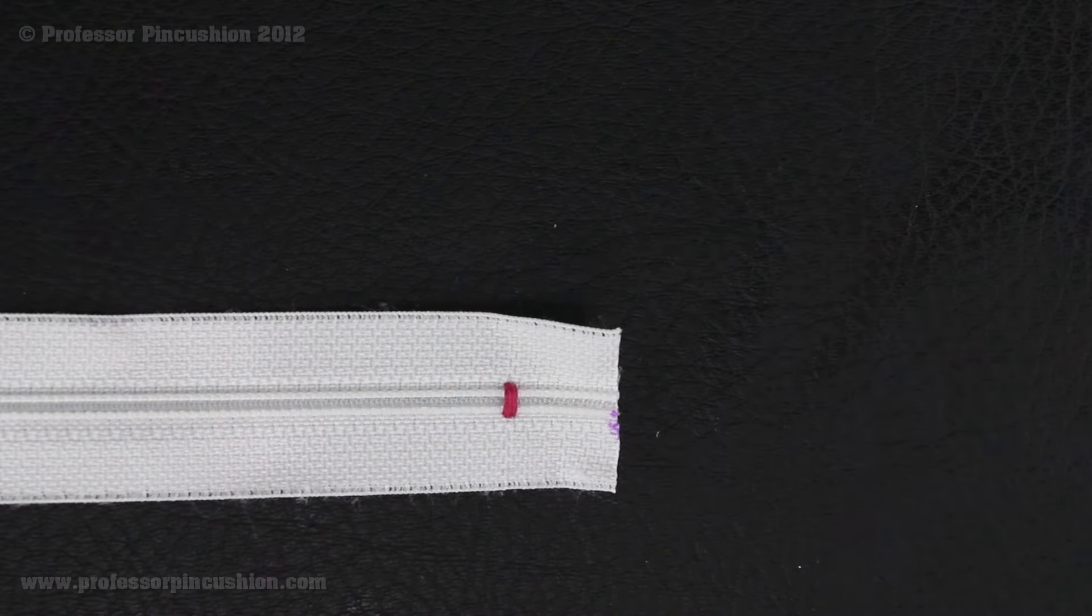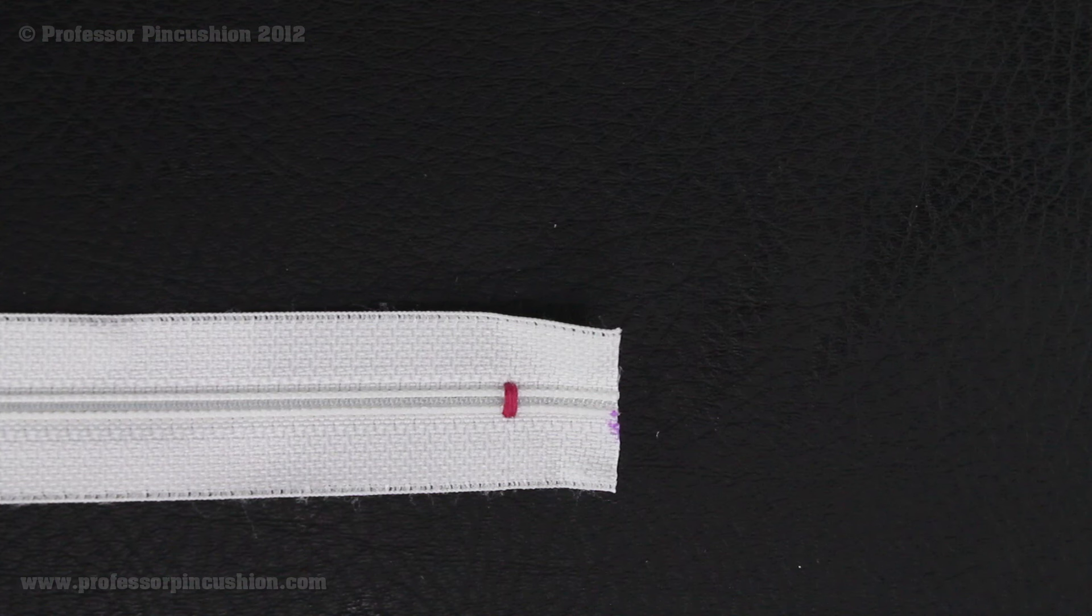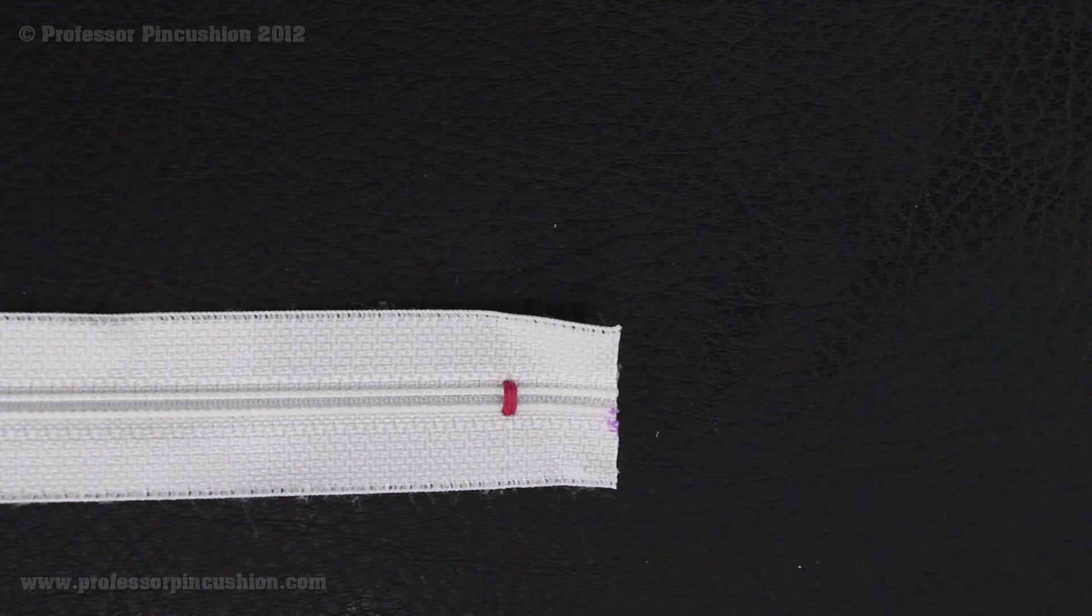And if you're using a really old zipper that has metal teeth, definitely use a heavy duty pair of scissors to do it. But now that is trimmed, our zipper is shortened, and that's all there is to it.